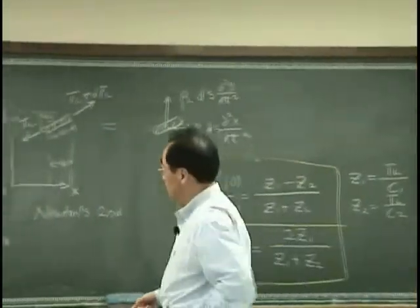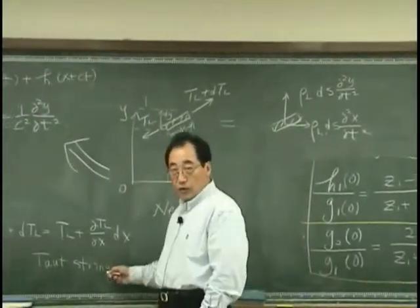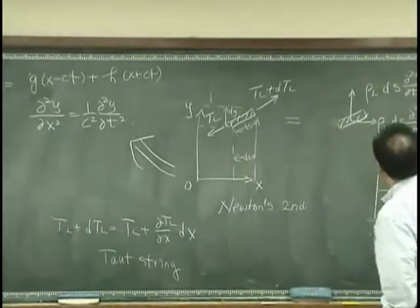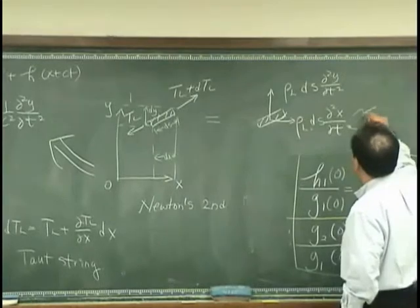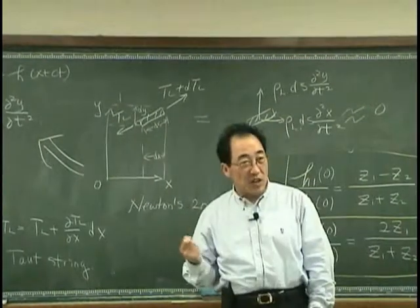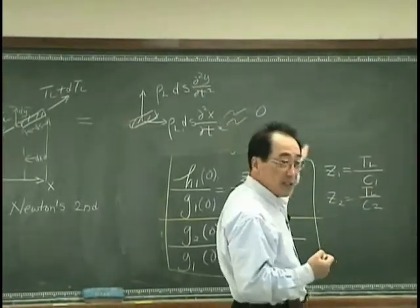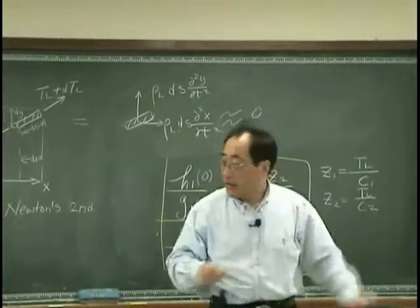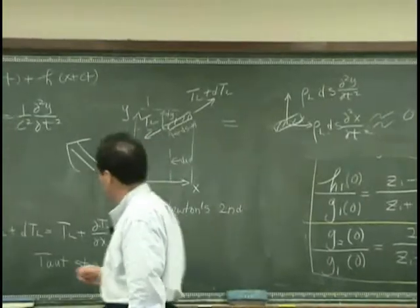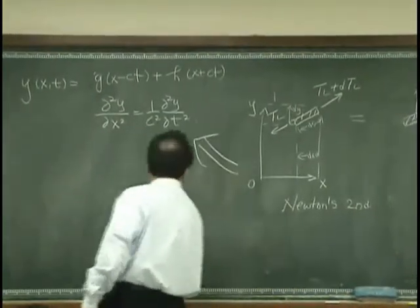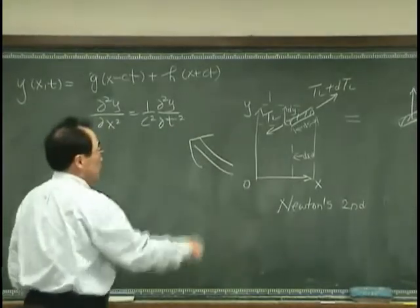So let's assume that string is very taut. And also, the motion in X direction should be very small compared with the motion in Y direction. Okay, then what we will have, only consider the motion in Y direction.